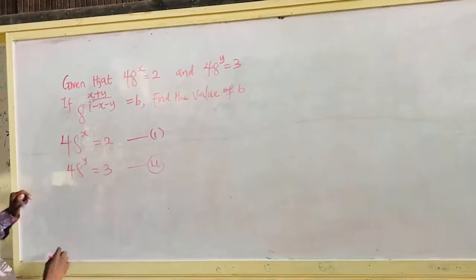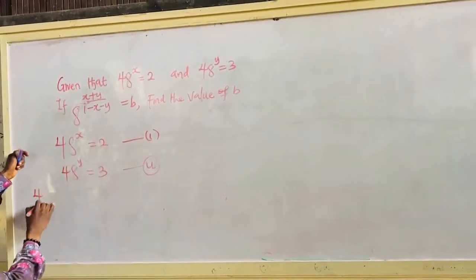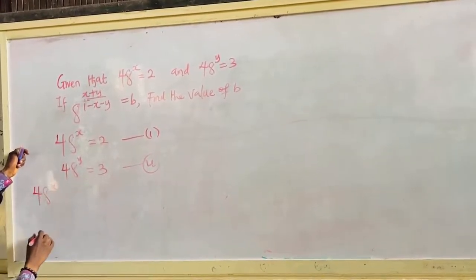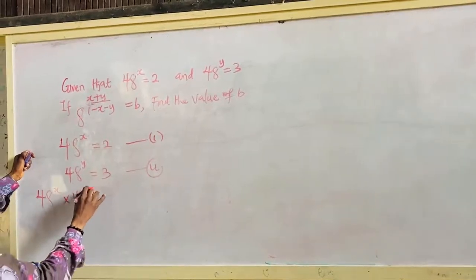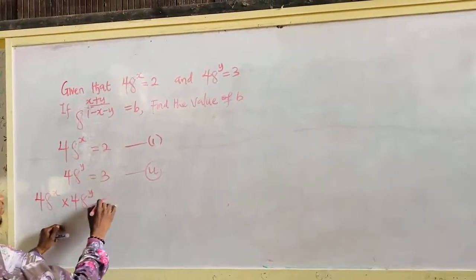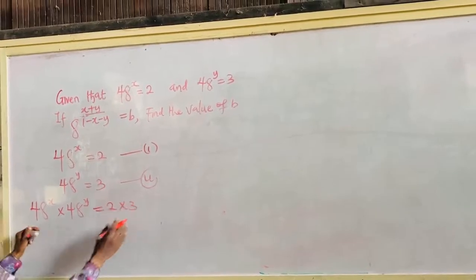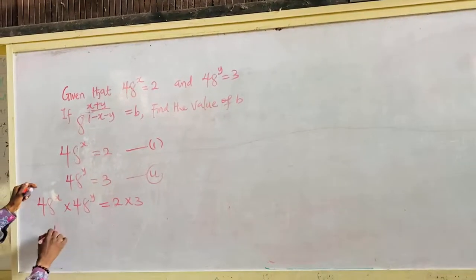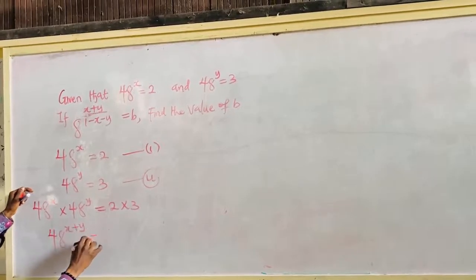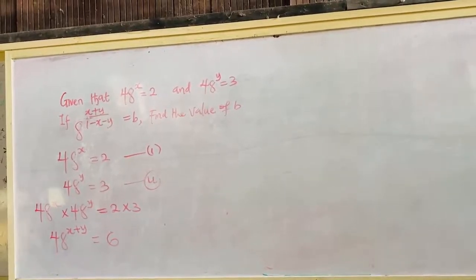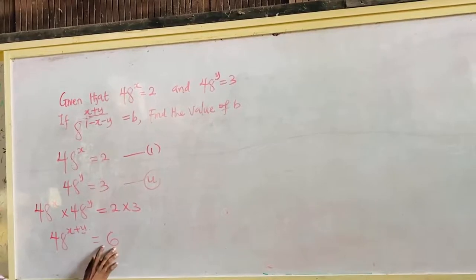So if I multiply equation 1 and equation 2 together, from the left hand side I have 48 raised to the power of x times 48 raised to the power of y, which is the same thing as 2 times 3. Now this gives us 48 raised to the power of x plus y is equal to 6.